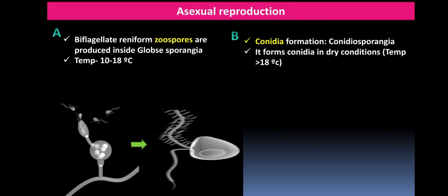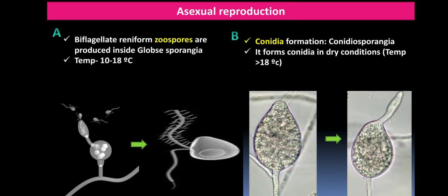Zoospore formation occurs at lower temperatures — between 10 to 18 degrees Celsius. When the fungus is in dry conditions, the sporangia behave as a single conidia and directly germinate to form a germ tube; this type of sporangium is called a conidiosporangium. So conidiosporangia form in dry/high-temperature conditions, while zoospores form in wet conditions between 10 to 18 degrees Celsius.